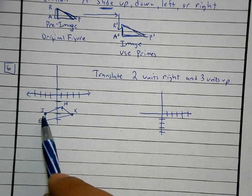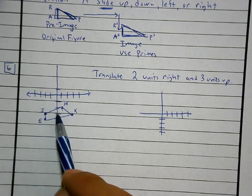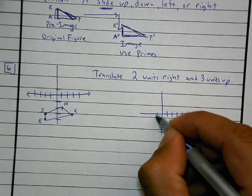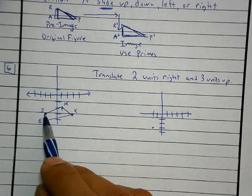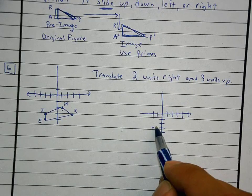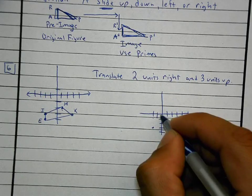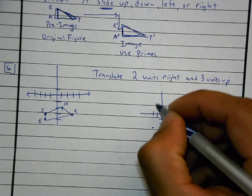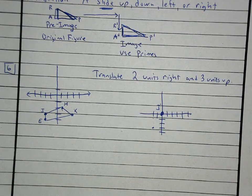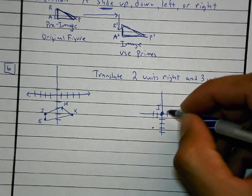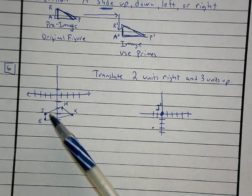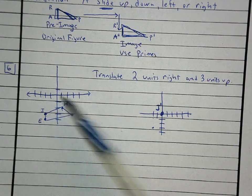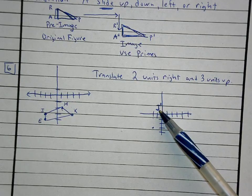For example, let's take this J. The J right now is at negative two, negative three. This is where J was, and I need to move it to the right two and up three. This spot right here is where my new J-prime is. When I move J to the right two and up three, I label it as J-prime.